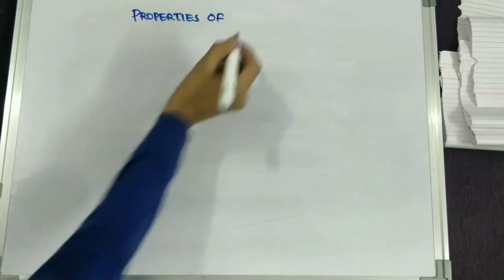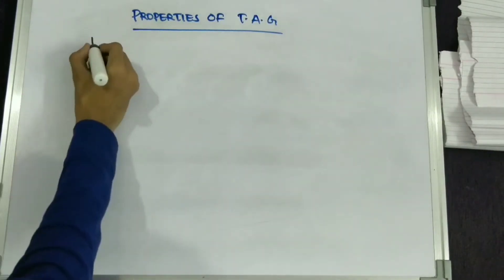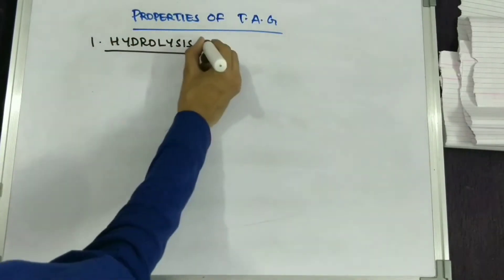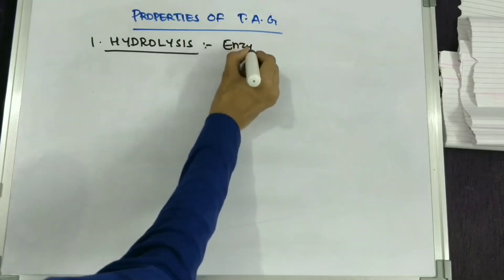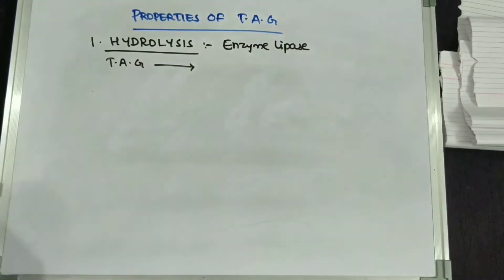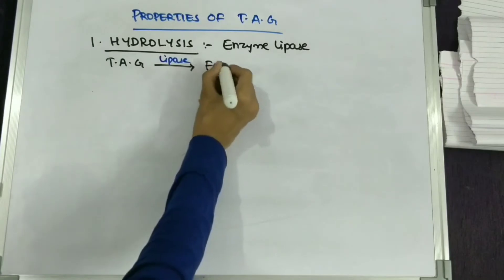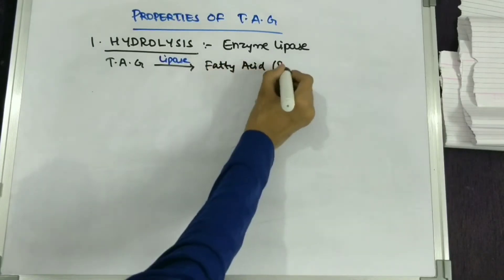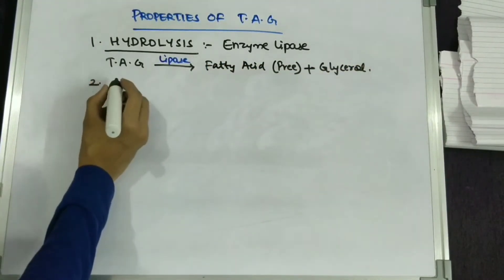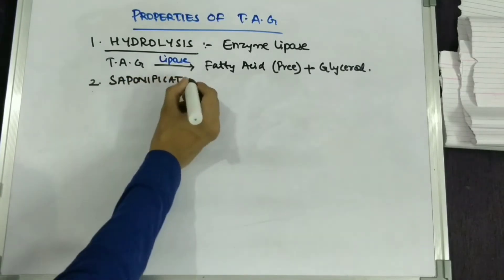Now let's see the properties of triacylglycerol. The first property is hydrolysis: in the presence of the enzyme lipase, triacylglycerol undergoes hydrolysis to give free fatty acid and a glycerol molecule.